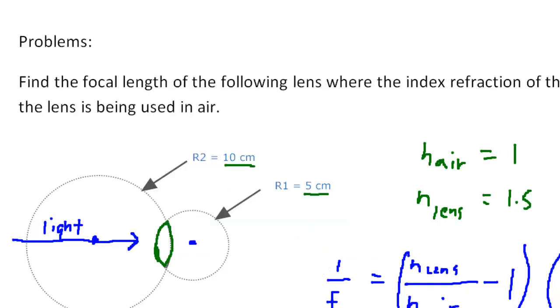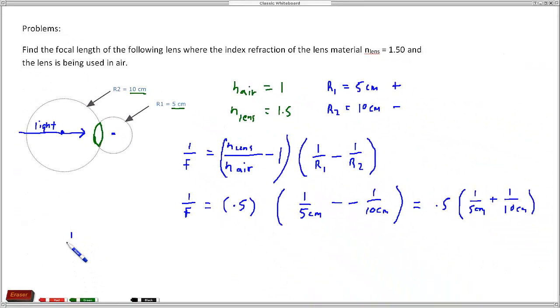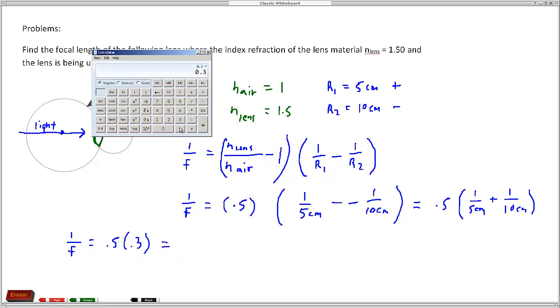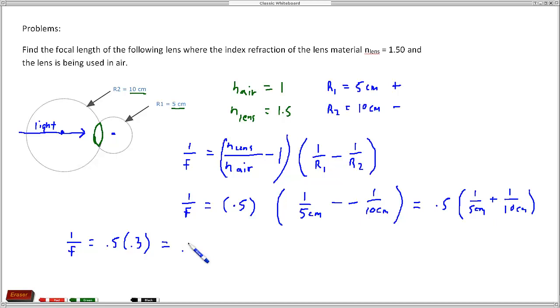So 1 over f equals 0.5 times 0.3, which equals 0.15. And that's remember, that's 1 over f. Now if we want to find f, f equals 1 over 0.15.